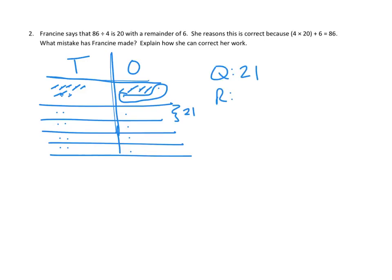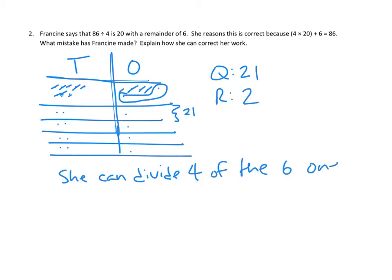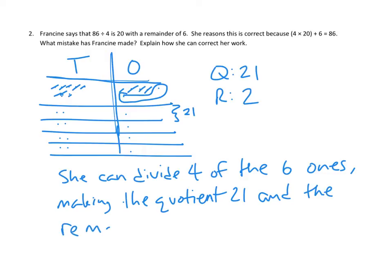And then what is our remainder? How many items do we have left over? Well, after we took 4 of the 6 ones, we had 2 ones left over. So our remainder is 2. So whereas Francine had said the result was 20 with a remainder of 6, actually we could divide up those 6 ones and make the quotient 21 with a remainder of 2. Since this asks us to explain how she can correct her work, I would say she can divide 4 of the 6 ones, making the quotient 21 and the remainder 2.